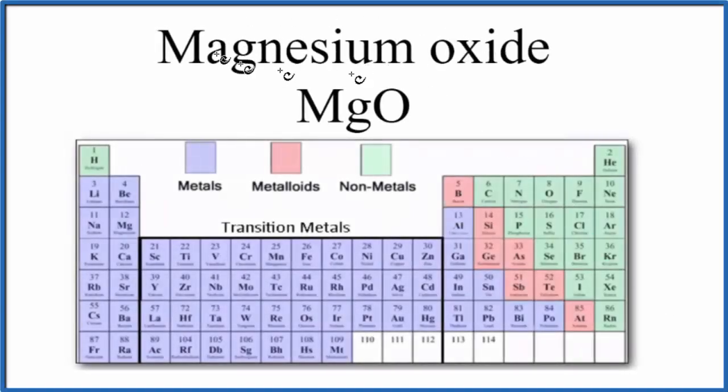In this video, we'll look at whether magnesium oxide, that's MgO, is ionic or covalent. Short answer, it's an ionic compound.